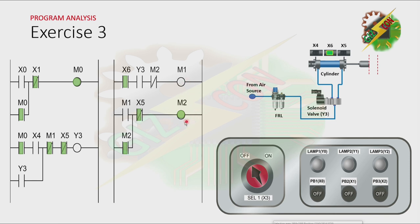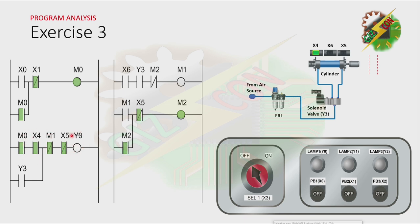And because M2 is on, the normally closed contact of M2 will turn off. Even if M1 is off, M2 will still be on because there is a latching here. And because Y3 is off now, the cylinder will retract. And because the cylinder is at fully retracted position, X4 will turn on. And that will cause Y3 to turn on again.